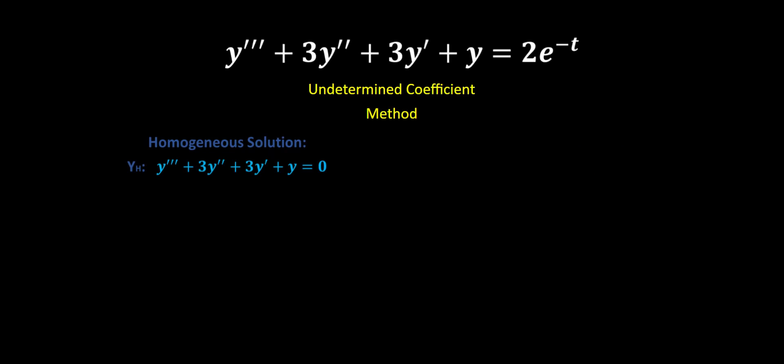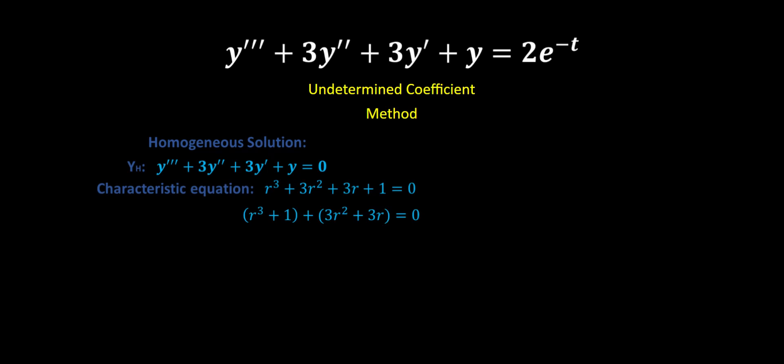To get started, I'm going to work on the homogeneous solution first. That means we're going to take the left-hand side of the ODE and set it equal to zero. From that, we're going to extract our characteristic equation. I'm going to group the first and last terms — the r cubed plus 1 — and that will allow me to use the a cubed plus b cubed algebraic expansion.